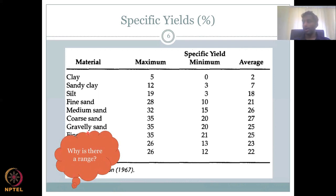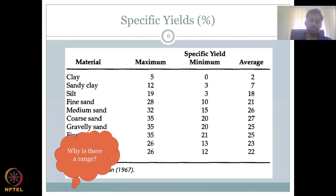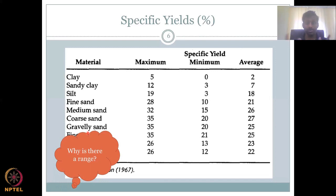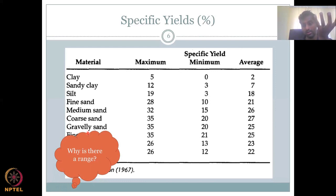Why is there a range and not one value? Because the climate and land use is not the same everywhere. For example, consider a clay field where a tractor has tilled the land — the tilling and specific plants with deep roots create pathways through the clay, increasing porosity. Since specific yield is a function of porosity, you can do management to increase the specific yield, allowing more water to go in and drain out due to gravity even in clay.